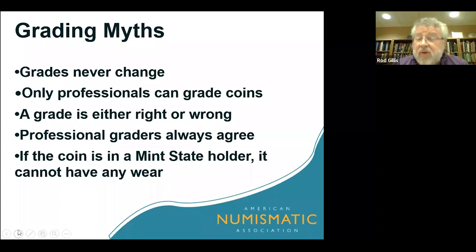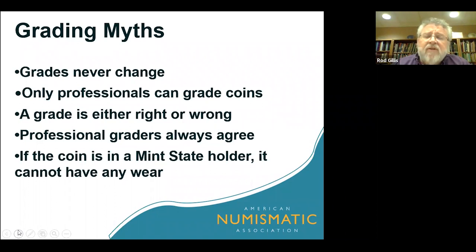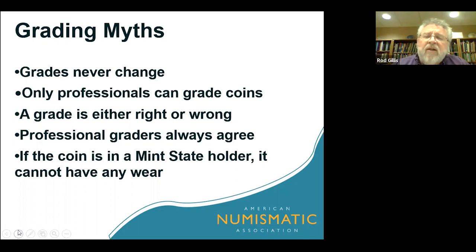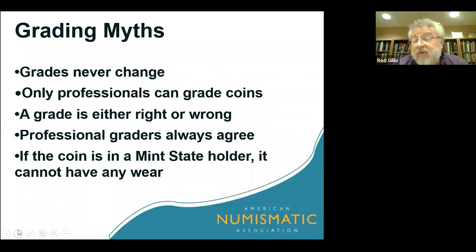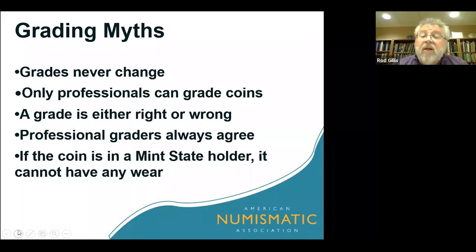Finally, and this is a big one: if a coin is in a mint state holder, it cannot have any wear. When we teach the live grading class, we usually pull out gold coins at the end and have students grade them. They'll say, 'You've taught us how to spot focal points and look for wear, and I'm sure I'm seeing wear right here — why is it in a mint state holder?' The answer is that with specific coins, there is some allowance or tolerance for wear even though it appears in a mint state holder. We'll talk more about that later.